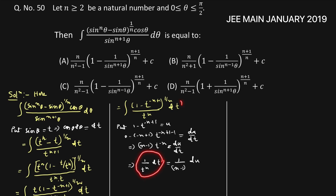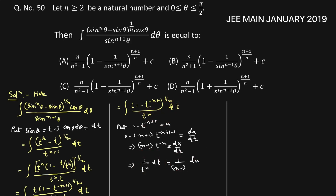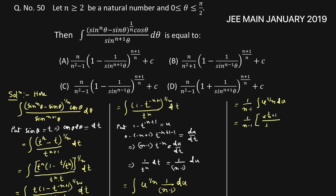In place of 1 by t to the power n dt, we write 1 by (n minus 1) du. Therefore the integral becomes the integral of u to the power 1 by n times 1 by (n minus 1) du, which equals 1 by (n minus 1) times the integral of u to the power 1 by n du, which equals 1 by (n minus 1) times u to the power (1 by n plus 1) divided by (1 by n plus 1), plus c.